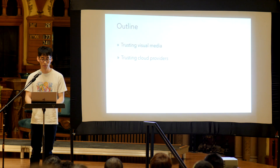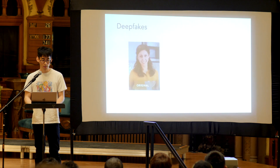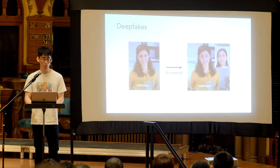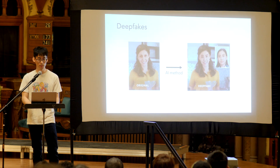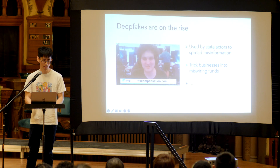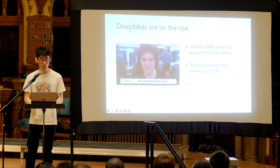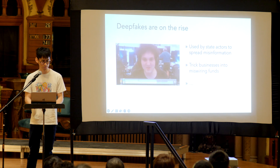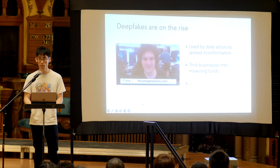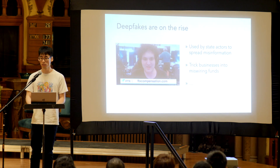I'll first start with trusting visual media. What we'll focus on are what are called deepfakes — a deepfake takes an image and edits it, typically for some malicious purpose. For example, when FTX collapsed, there was a recent online scam that released a video of SBF, modified, saying you should go to ftxcompensation.com to receive compensation, but in reality they just stole all your funds. They're also used by state actors to spread misinformation — Russia has used this in the Russia-Ukraine conflict, and also to trick businesses into misdirecting funds.